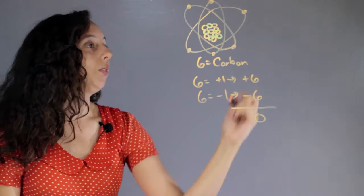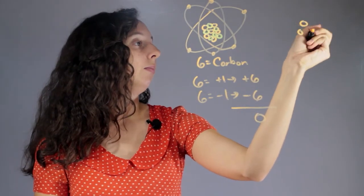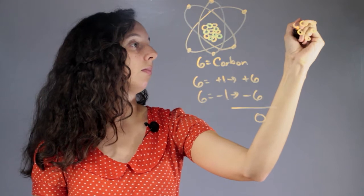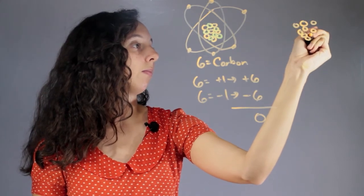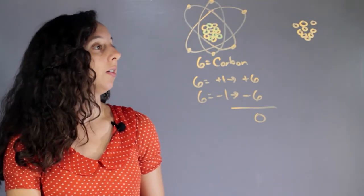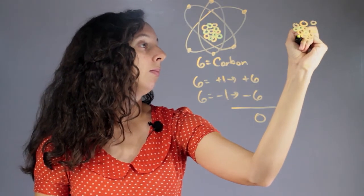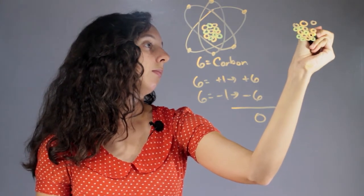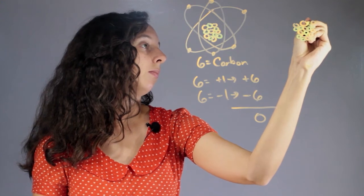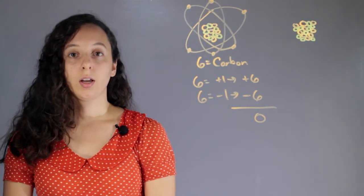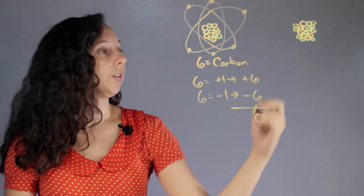So, if we do something that has nine protons, and let's say it also has nine neutrons, then this is going to be identified as fluorine.